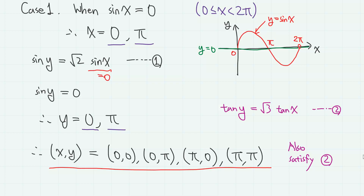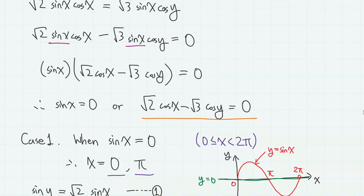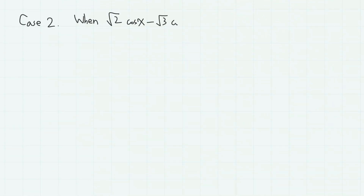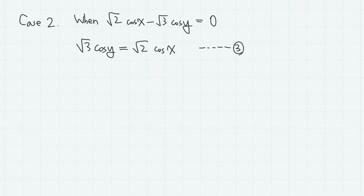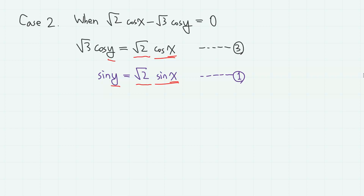Now let's move on to the next case. The second case is when square root of 2 cosine x minus square root of 3 cosine y equals 0, so square root of 3 cosine y equals square root of 2 cosine x — let's call this equation 3. Comparing this with equation 1, we notice that x is only on the right-hand side and y only on the left-hand side, and both sine x and cosine x are multiplied by the same number, square root of 2. This means we can eliminate a variable by squaring and adding, using sine squared x plus cosine squared x equals 1.